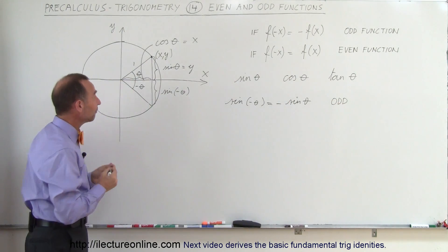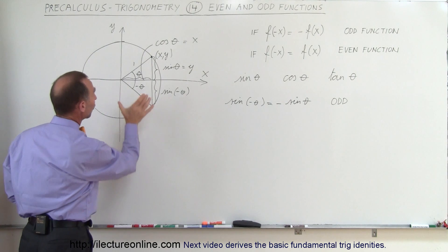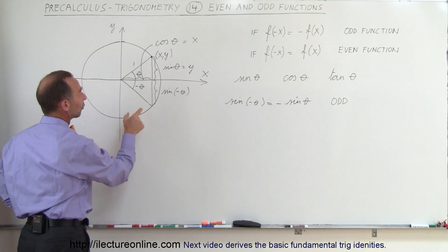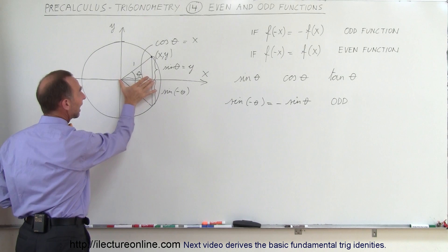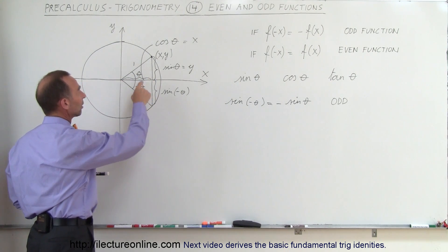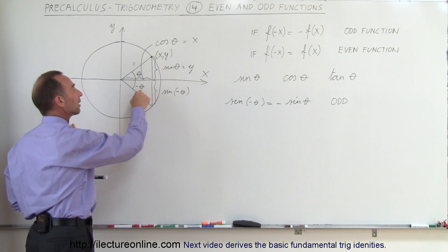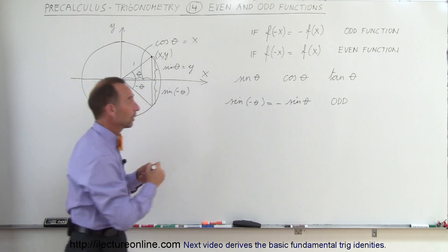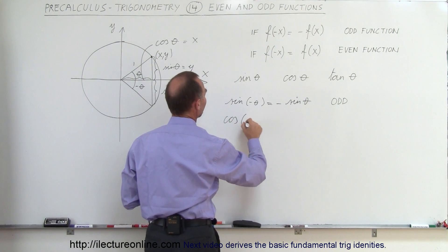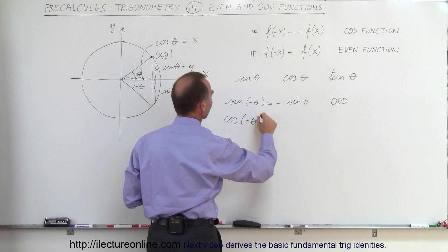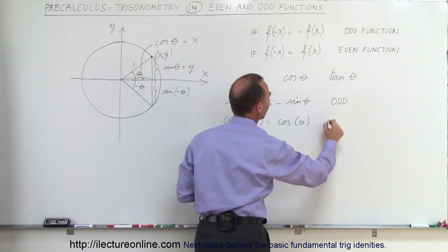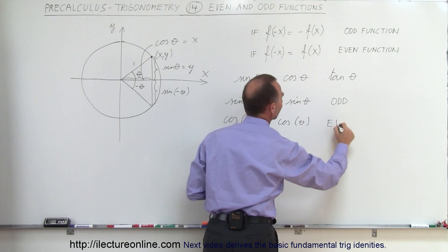In the case of the cosine, it's all different. If we take the cosine of the angle, we get this value. If we take the cosine of the negative angle, we get the exact same value. So the cosine of the negative angle gives you the exact same value as the cosine of the angle. We can write it like this: cosine of negative theta is equal to cosine of theta, and therefore this becomes an even function.